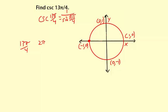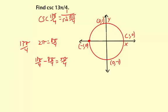2π equals 8π over 4. So 13π over 4 is more than one whole rotation around the circle. What I'm going to do is take 13π over 4 minus 8π over 4, and that equals 5π over 4. So 5π over 4 is coterminal with 13π over 4.